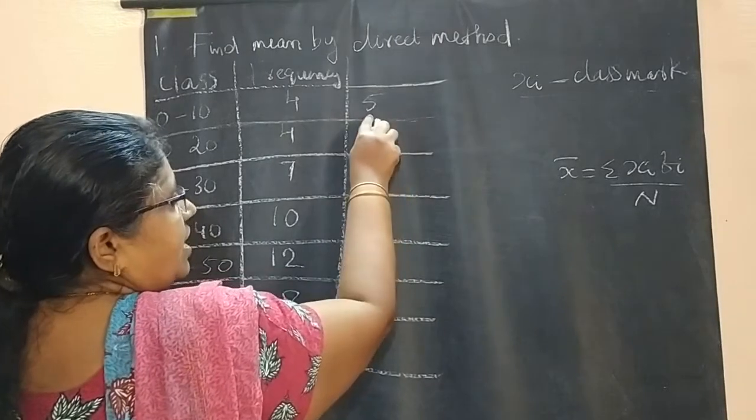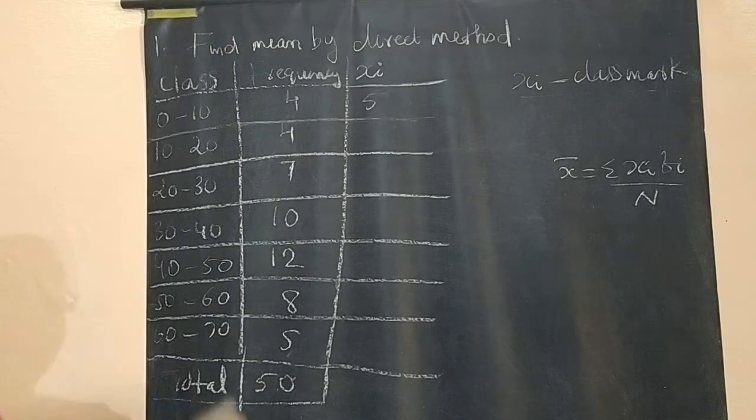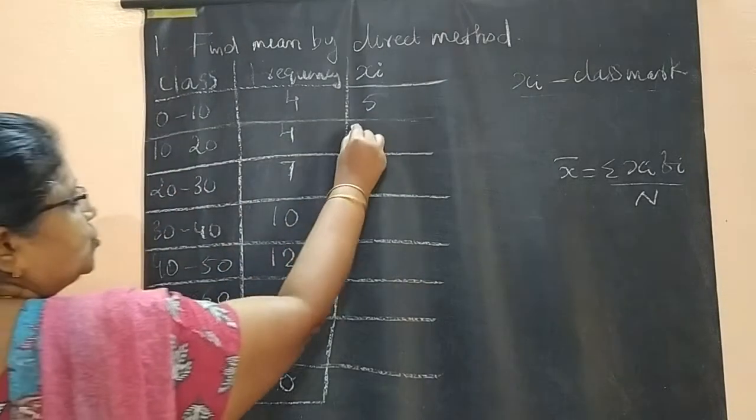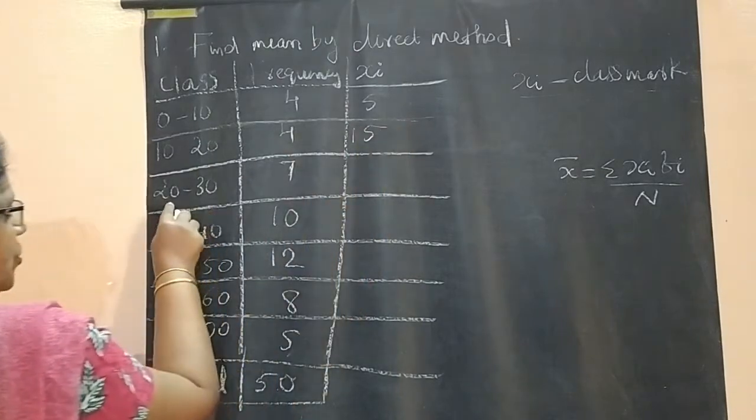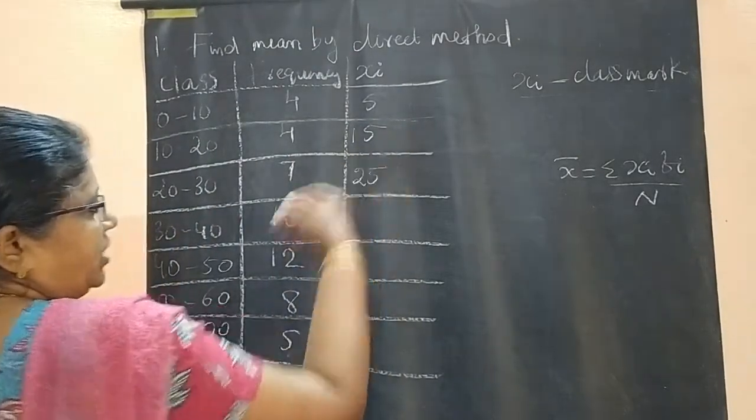This is our xi. This column you have to write as xi. Then, (10 + 20) / 2 = 15. (20 + 30) / 2 = 25.